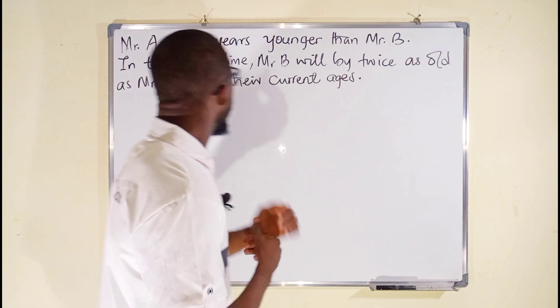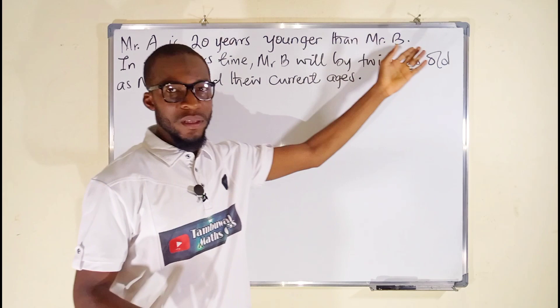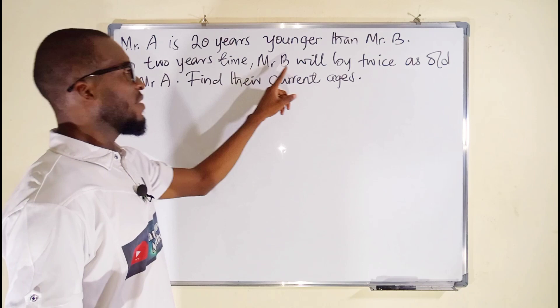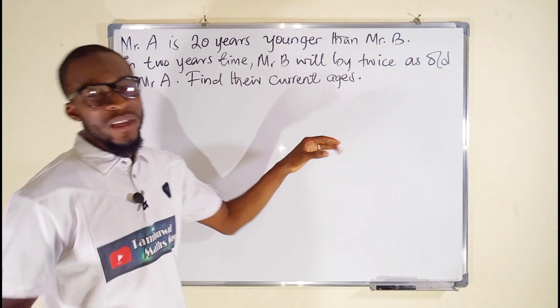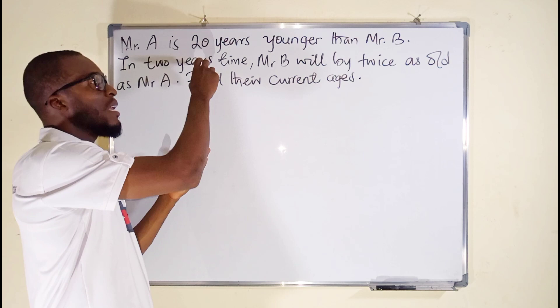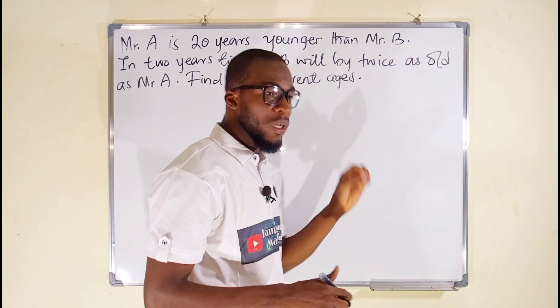Back to business. This question reads: Mr. A is 20 years younger than Mr. B. But in two years coming, Mr. B will be twice as old as Mr. A. This means that currently Mr. B is older than Mr. A. We are asked to find their current ages.